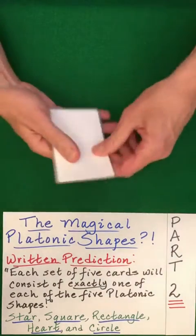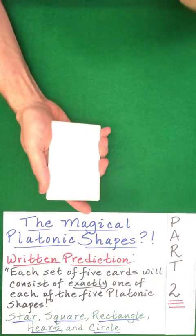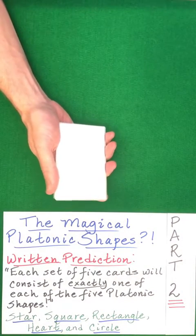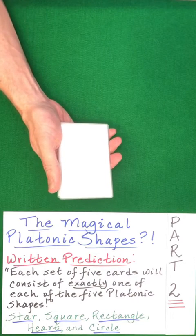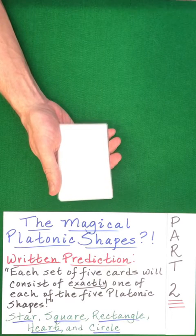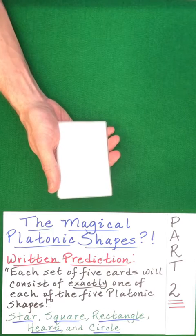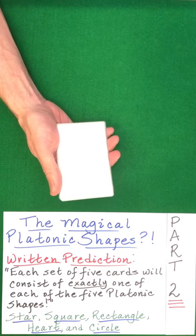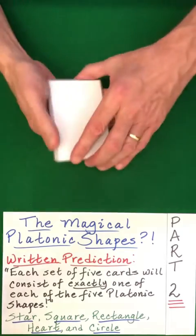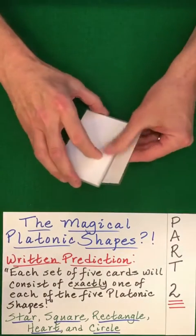But I think it's a good idea to really mix these cards to truly test the claim that if these platonic shapes are combined in equal measure and then randomly mixed and then separated into groups of five, each group of five will consist of exactly one of each shape. So let's go ahead and just continue to mix these.